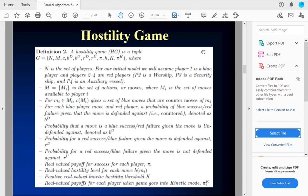For each blue player move and red player, there's a probability that blue wins and red loses flat out if the move is defended against. This is BD. There's a different probability if the move is not defended against BU. Similarly, there's a probability of red success and blue failure if it's defended against RD, undefended against RU. And when there's a success, each player has some payoff, they're going to get pi. There's a hostility value associated with each move, which is H of the move. And finally, there's this kinetic threshold K.